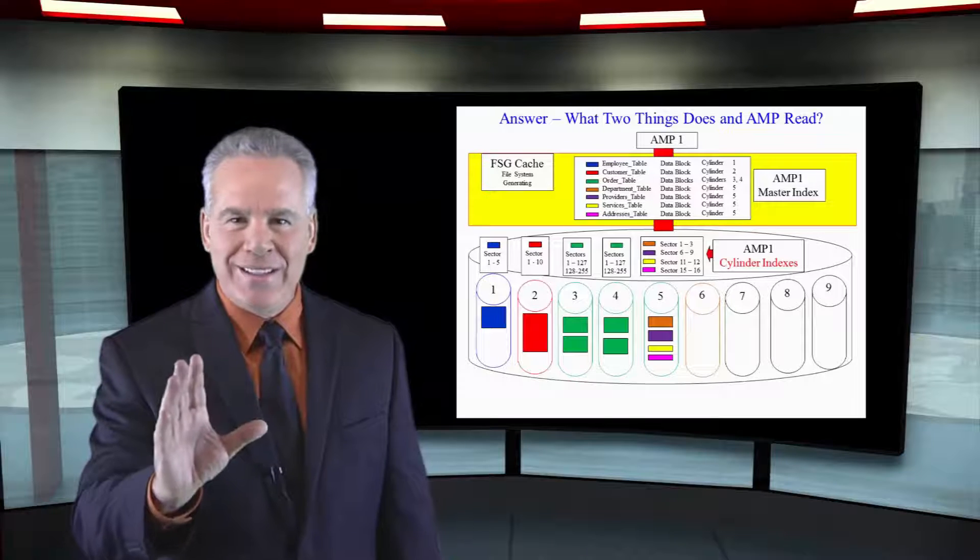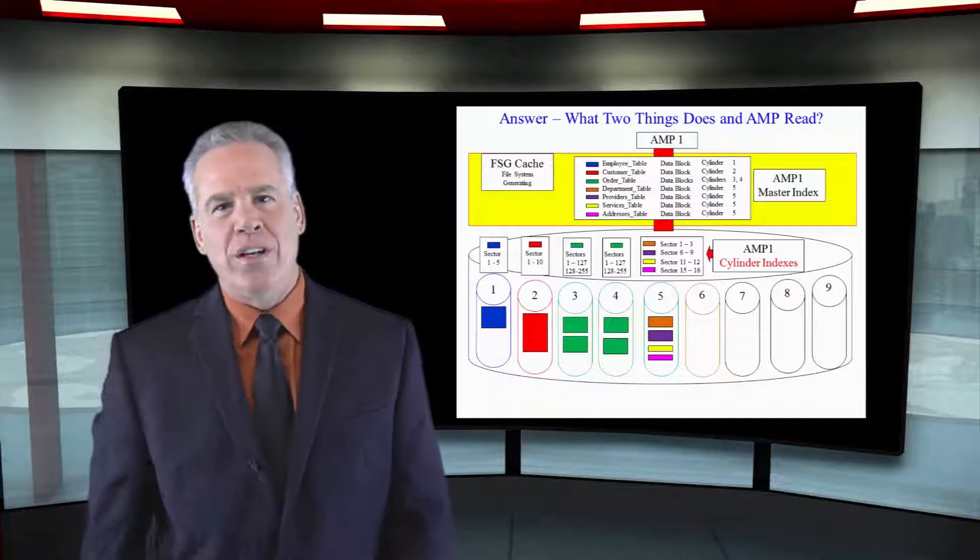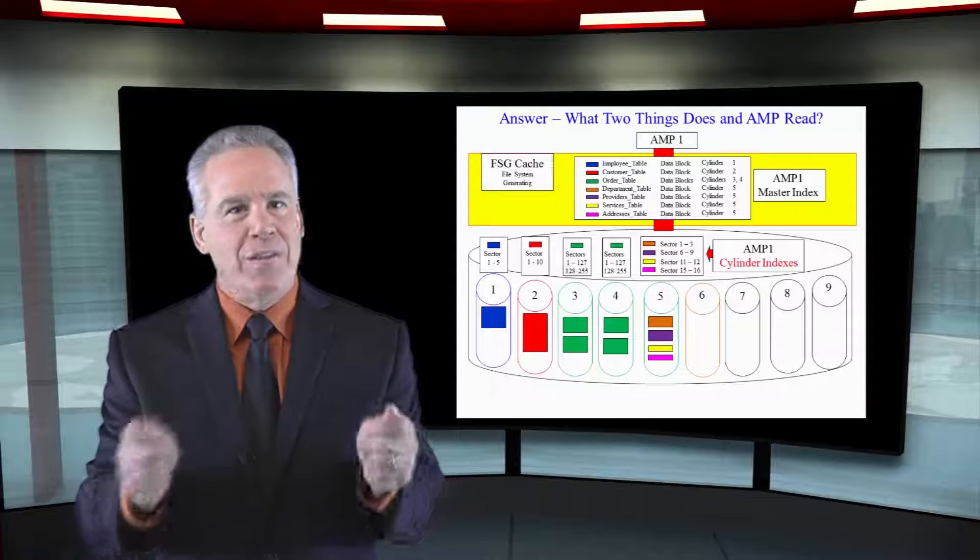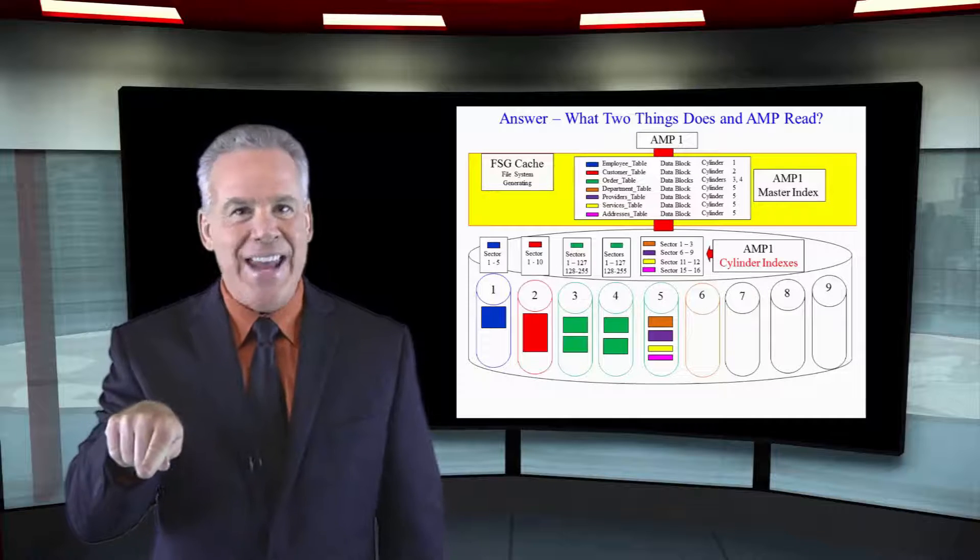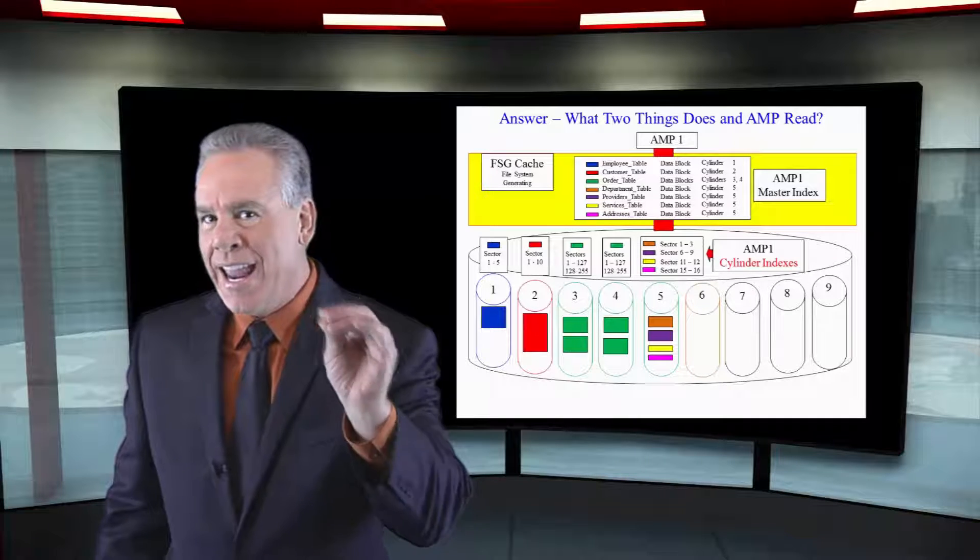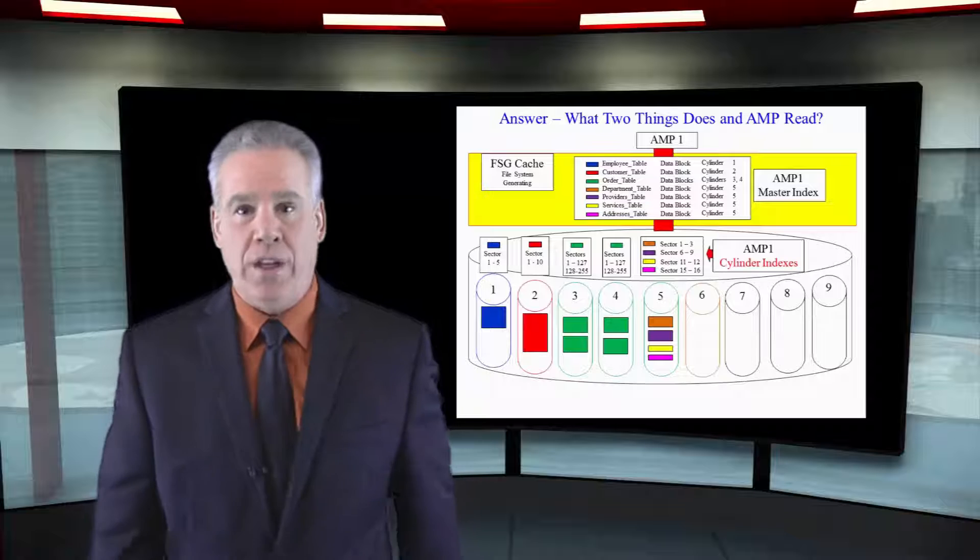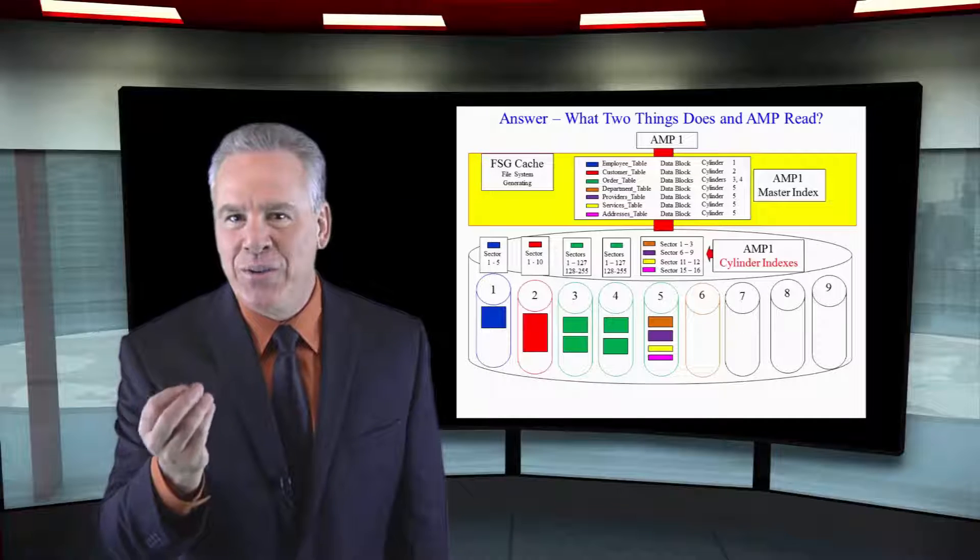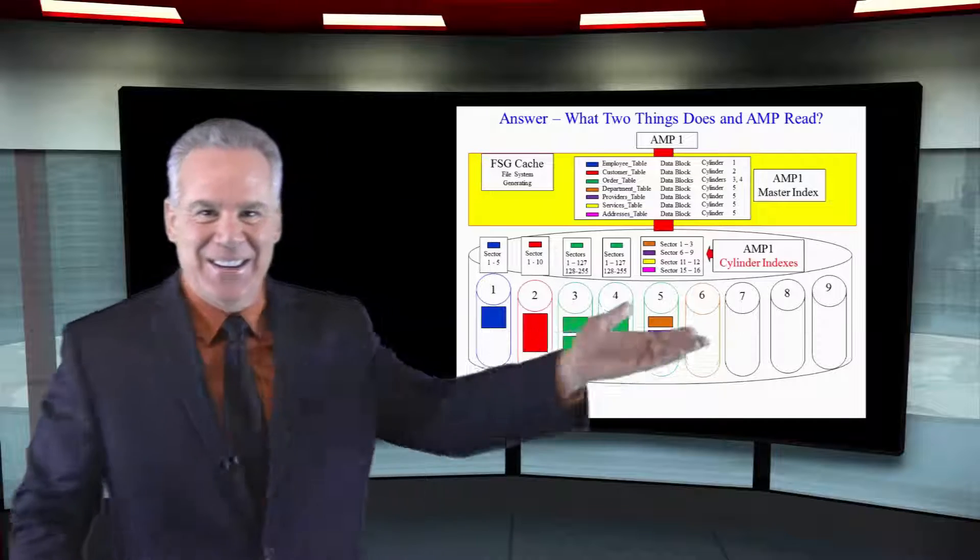If you want to order a pizza, there's two things you're going to need to do maybe. Look in the phone book and get that number. When an amp reads data, there's two things it's going to look up. The master index and the cylinder index.